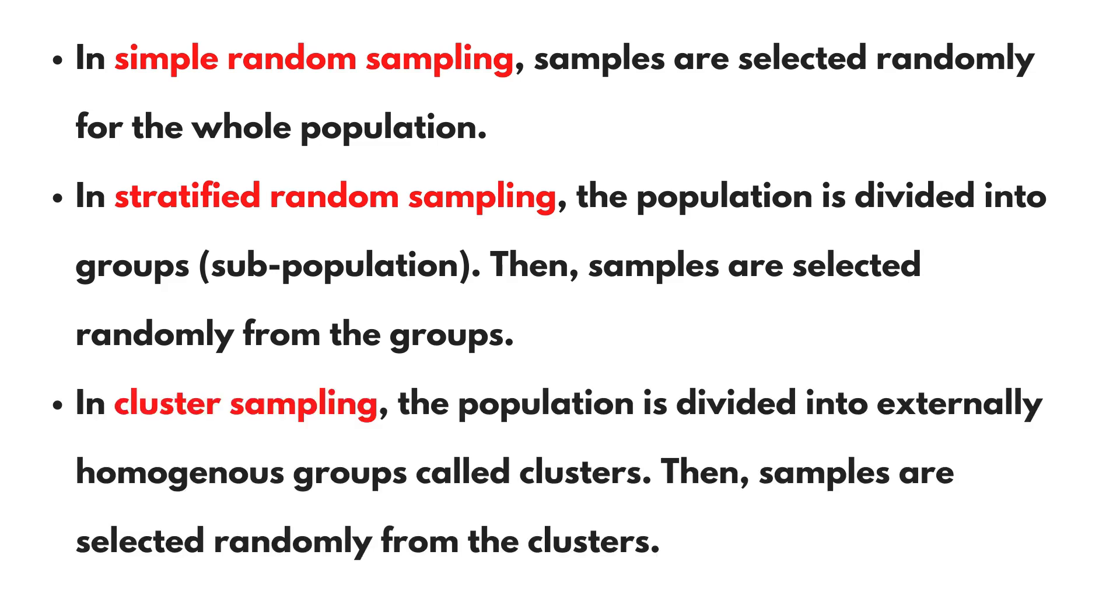In cluster sampling, the population is divided into externally homogenous groups called clusters. Then samples are selected randomly from the clusters.